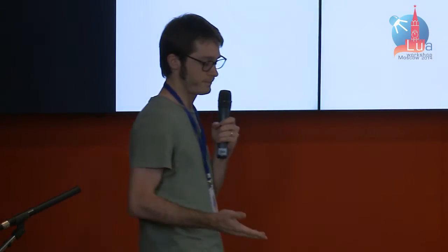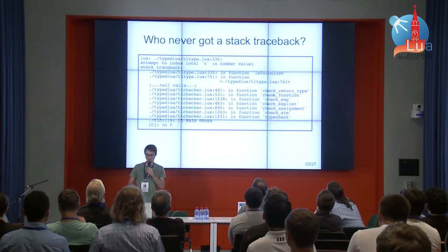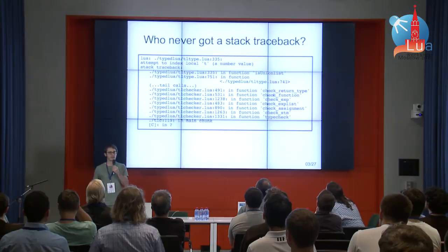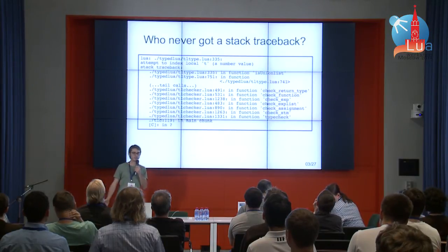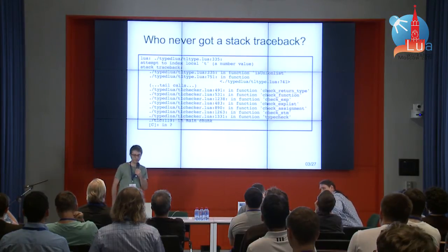Bringing this discussion to Lua in particular, here is a stack trace back, an error that I got while developing TypedLua. It says that there is an error at TLType.lua, but actually the error is coming from TLChecker here, from the check function. I forgot to pass an argument. It would be great if I could have a compiler that would tell me that, instead of looking at the code and trying to figure out what I have done wrong.